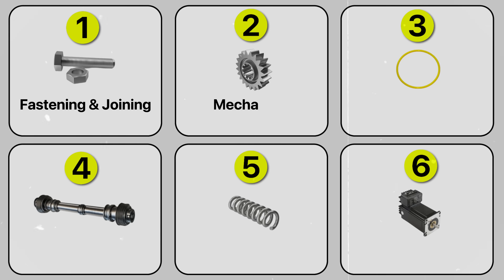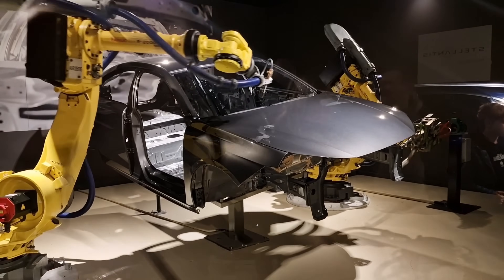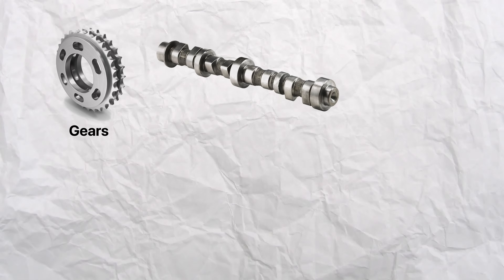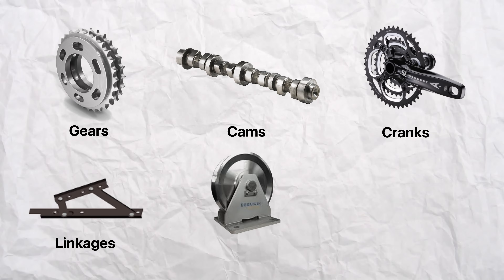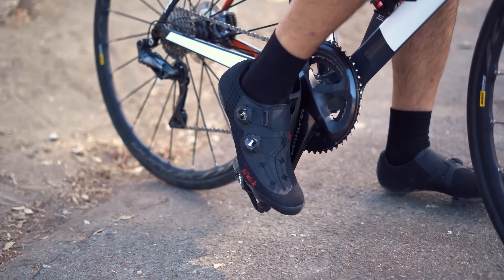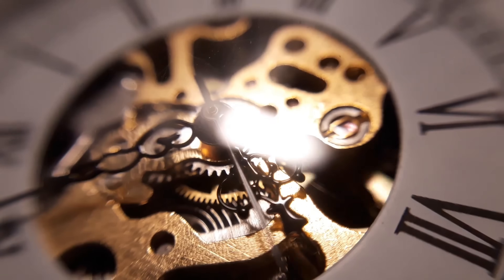The second category are mechanism elements that transmit motion, create mechanical advantage, and control movement. Gears, cams, cranks, linkages, pulleys, and belts all fit into this category. Gears are critical for transferring power and changing torque or speed. You'll find them in bicycles, car transmissions, watches, and escalators. There are many various types like spur, helical, bevel, worm gears, and so on, each with their specific applications.